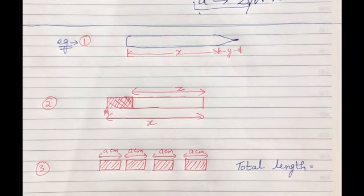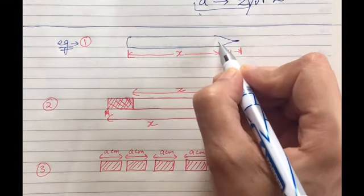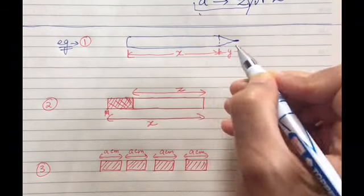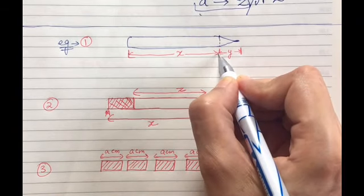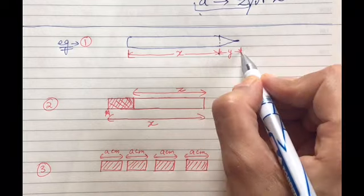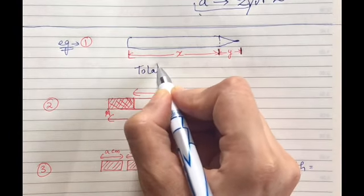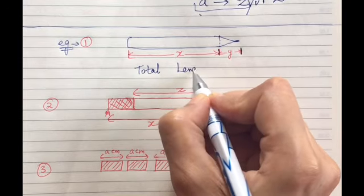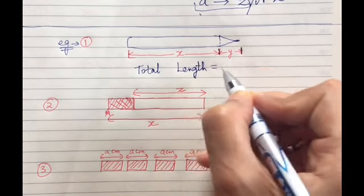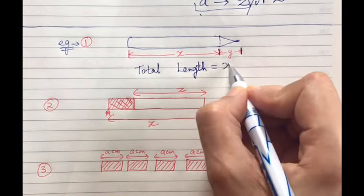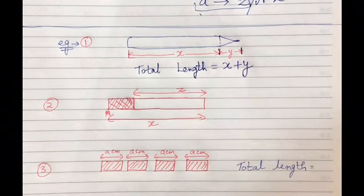Now let us take up few examples for this. You can see this is a pencil in which this length is X and this length is Y, so total length will be equal to this plus this, so X plus Y.